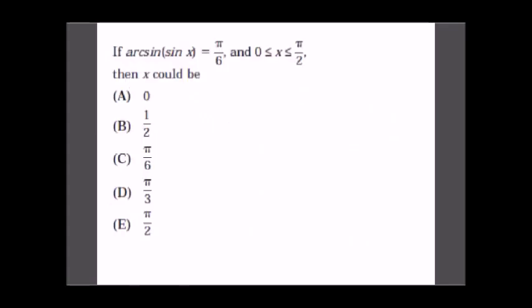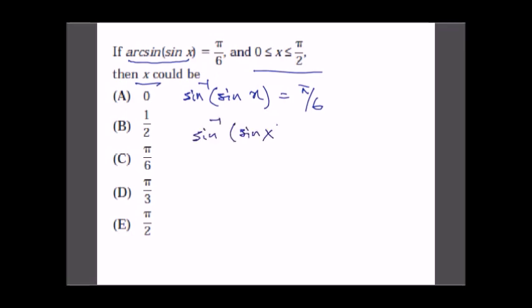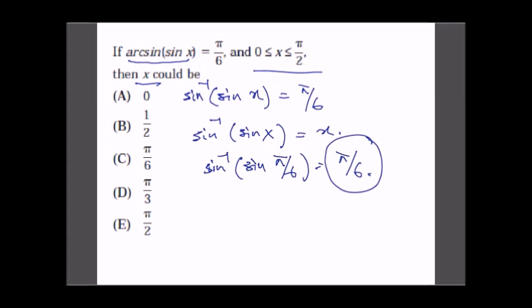The question: if sin⁻¹(sin x) = π/6 and 0 < x < π/2, find x. Using the general form sin⁻¹(sin x) = x for x in [−π/2, π/2], we get sin⁻¹(sin(π/6)) = π/6, so x = π/6. Option C is the answer.